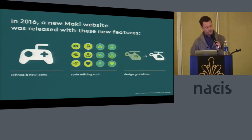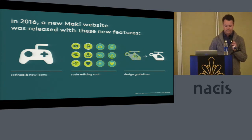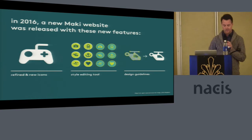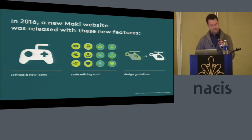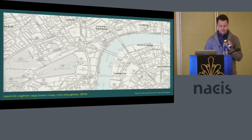Earlier this year, a new Maki website was released with refined new icons and also with two big additions: a style editing tool that allows users to customize icon styles based on their map design, and design guidelines that allow people to contribute to the Maki catalog while maintaining cohesion and consistency as the catalog grows. We hope these new features reinforce the reason Maki exists — to help map designers make beautiful and useful maps.